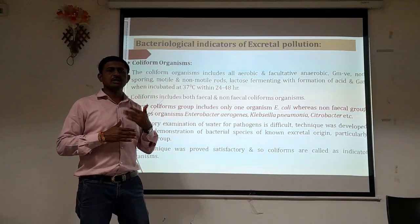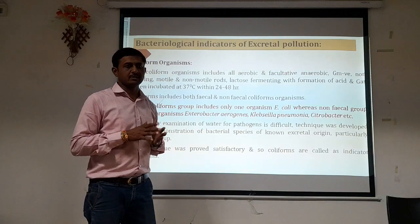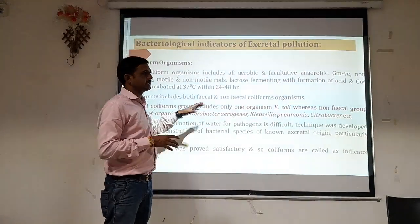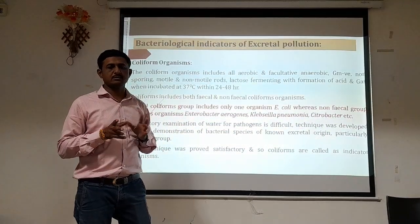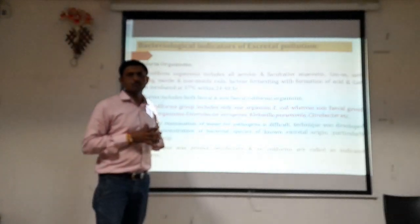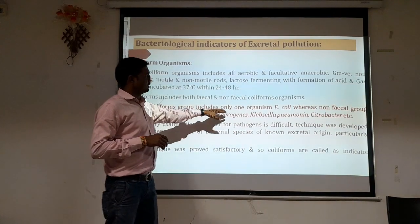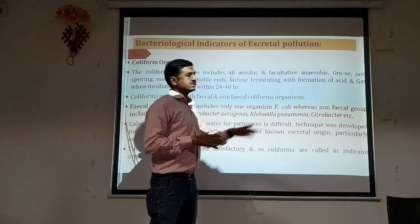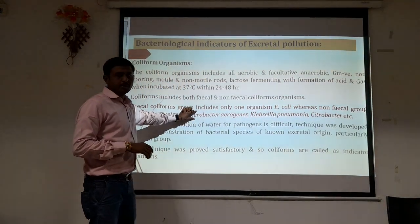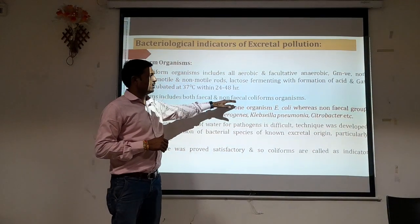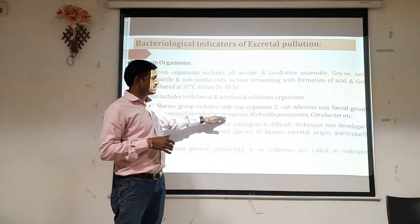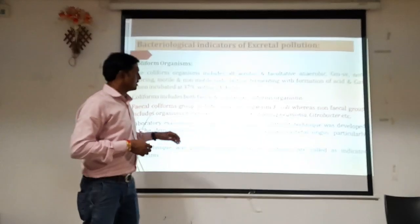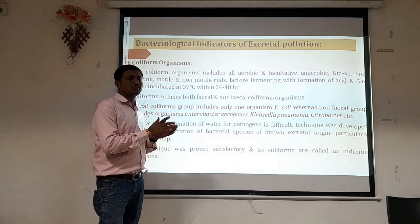Fecal coliforms are organisms present in fecal matter, which is why the term 'fecal coliform' is used. Non-fecal coliforms are present in soil and do not originate from fecal matter. The fecal coliform group includes only one organism — Escherichia coli — which is considered the indicative organism of fecal contamination. Non-fecal coliforms include Enterobacter aerogenes, Klebsiella pneumoniae, and Citrobacter, which may be present in soil rather than from fecal contamination.